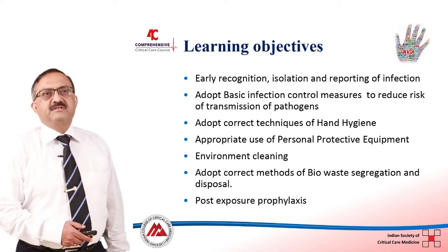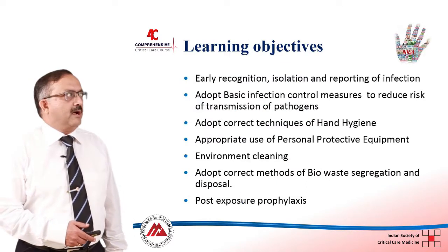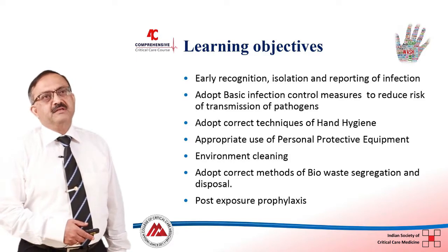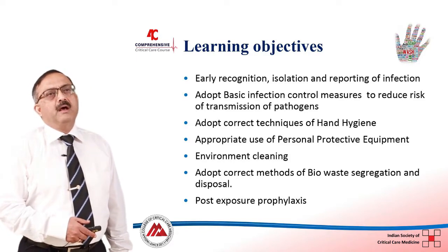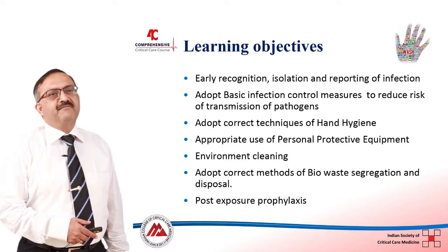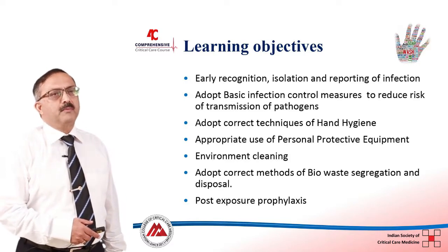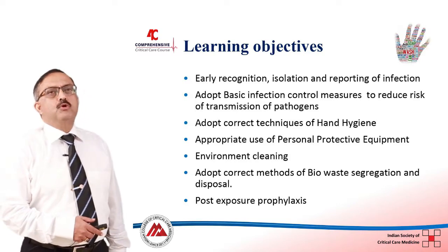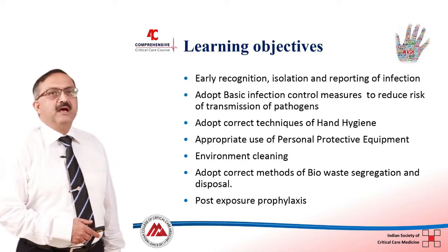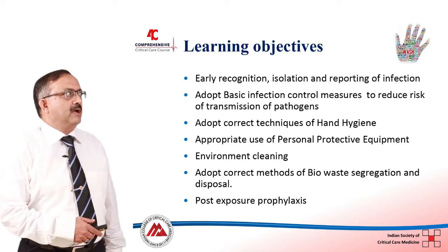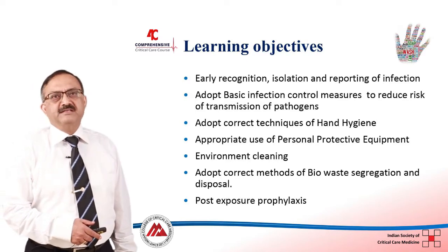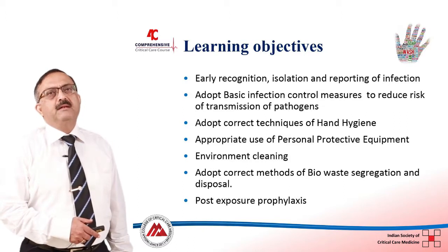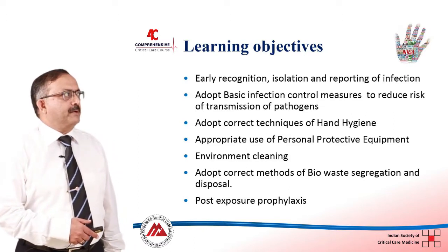The learning objectives for this module are: early recognition, isolation, and reporting of infection. It is very important that you are able to detect or think of infection in certain patients who are being treated in critical care. Adopt basic infection control measures that will reduce the risk and transmission of pathogens. Adopt correct techniques of hand hygiene, which is the single most important factor that will prevent infection in critical care patients.